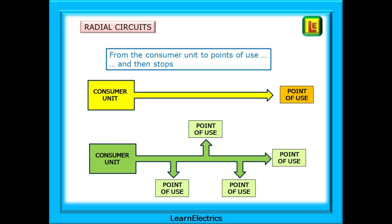Let's reassure ourselves as to what a radial circuit is. For the purposes of this video, it is quite simply any circuit that leaves the consumer unit and travels to the various points of use, and then stops. The key thing is, a radial circuit does not return to its starting point. It does not go back to the consumer unit.